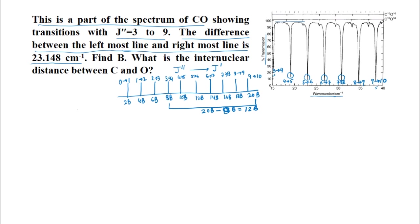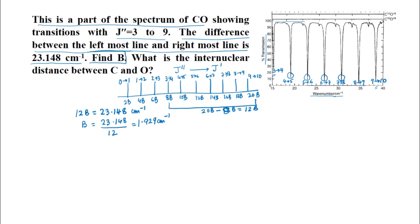Thus, we can write 12B equals 23.148 centimeter inverse, or B equals 23.148 divided by 12, that is 1.929 centimeter inverse. So we have found the first part of the problem — B is 1.929 centimeter inverse.